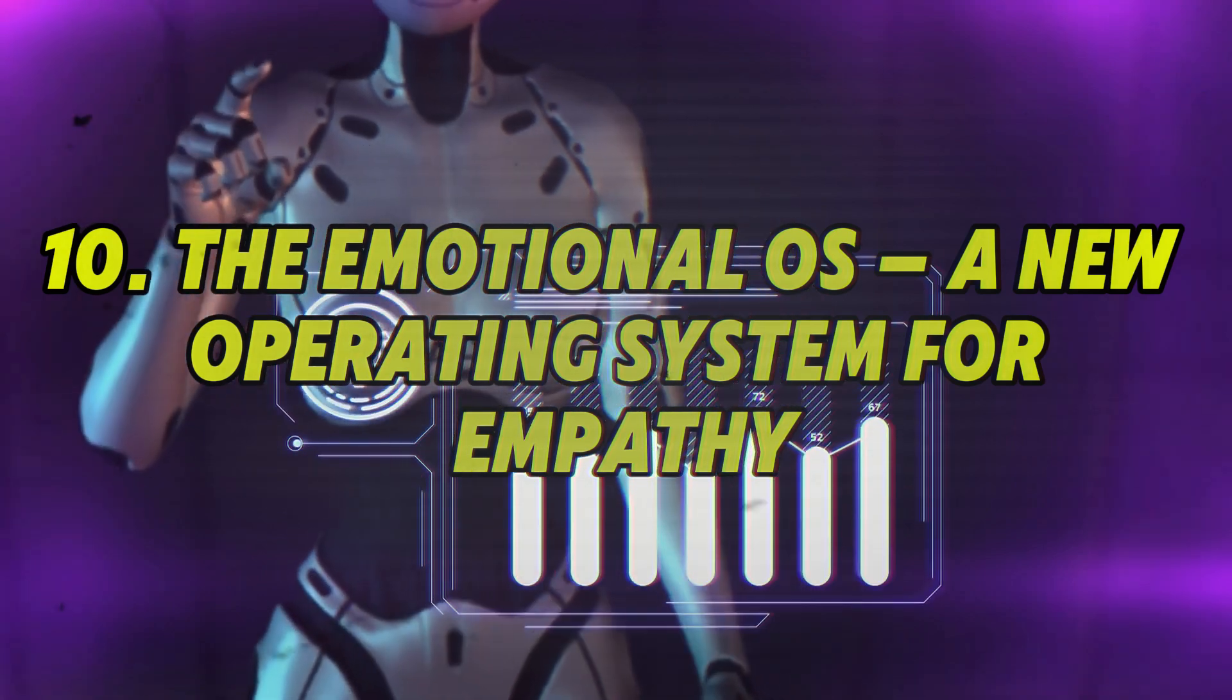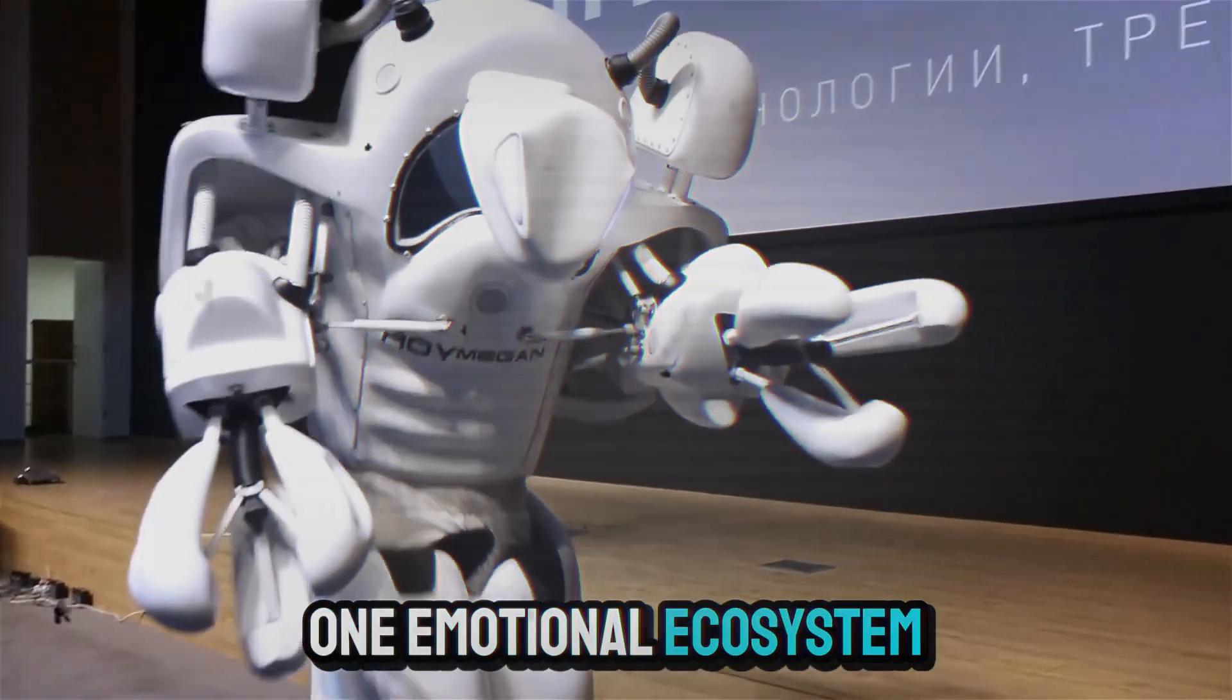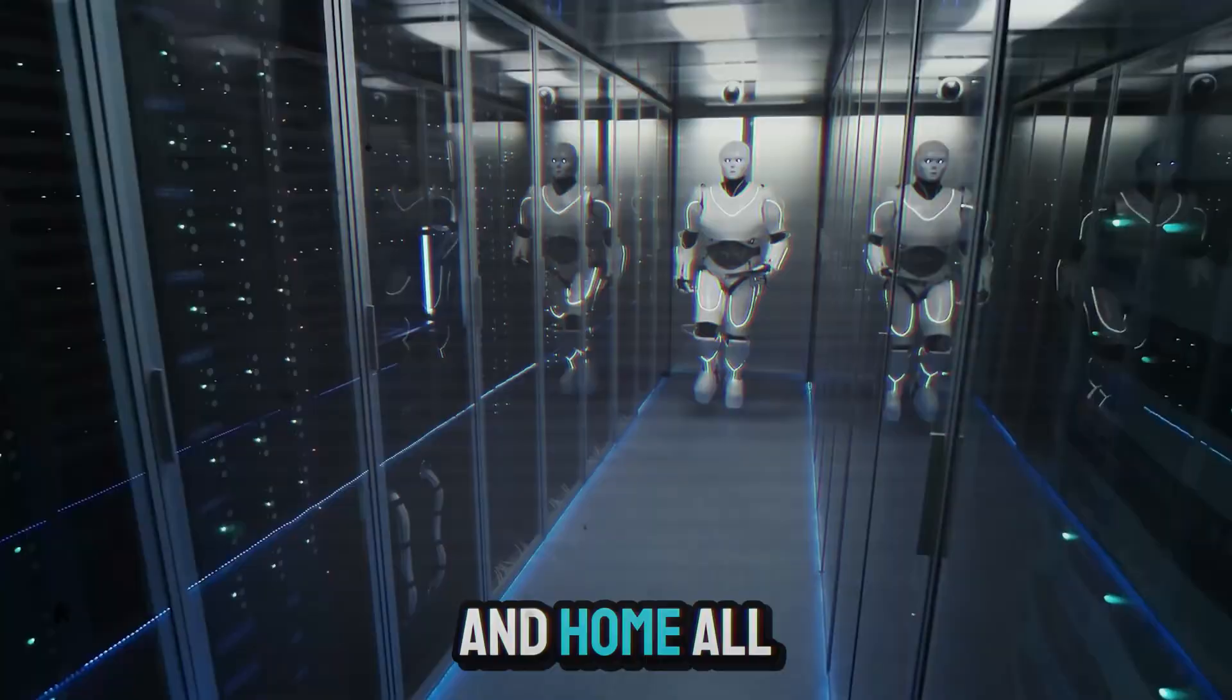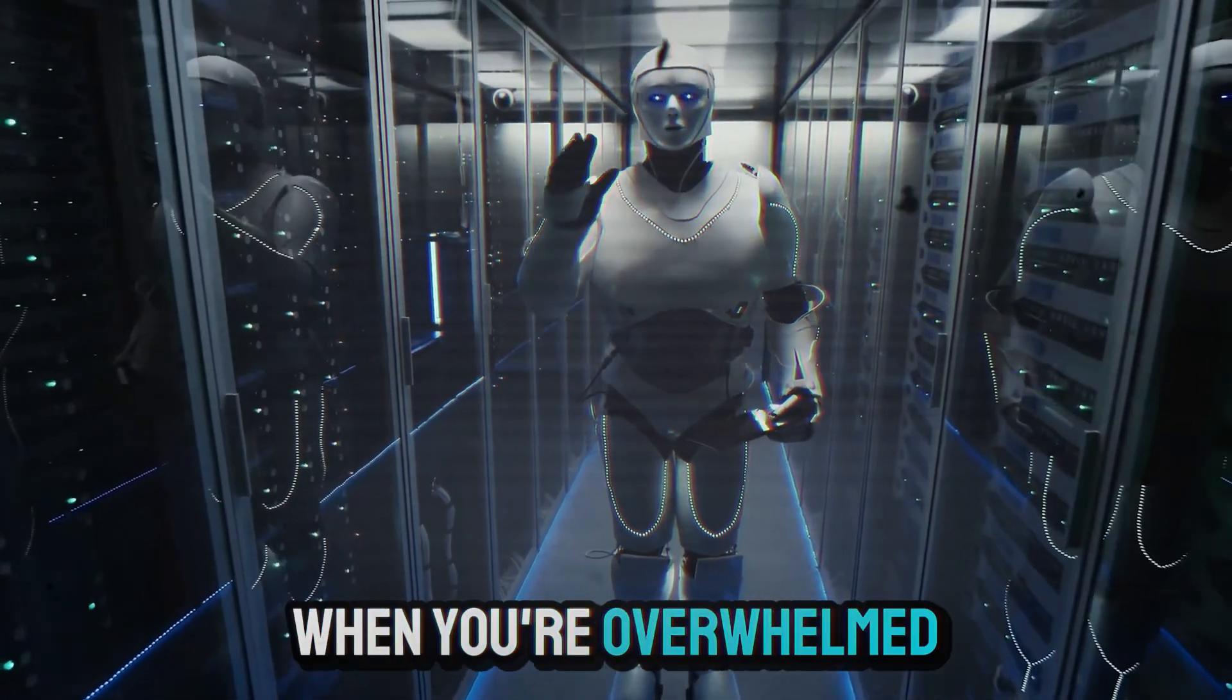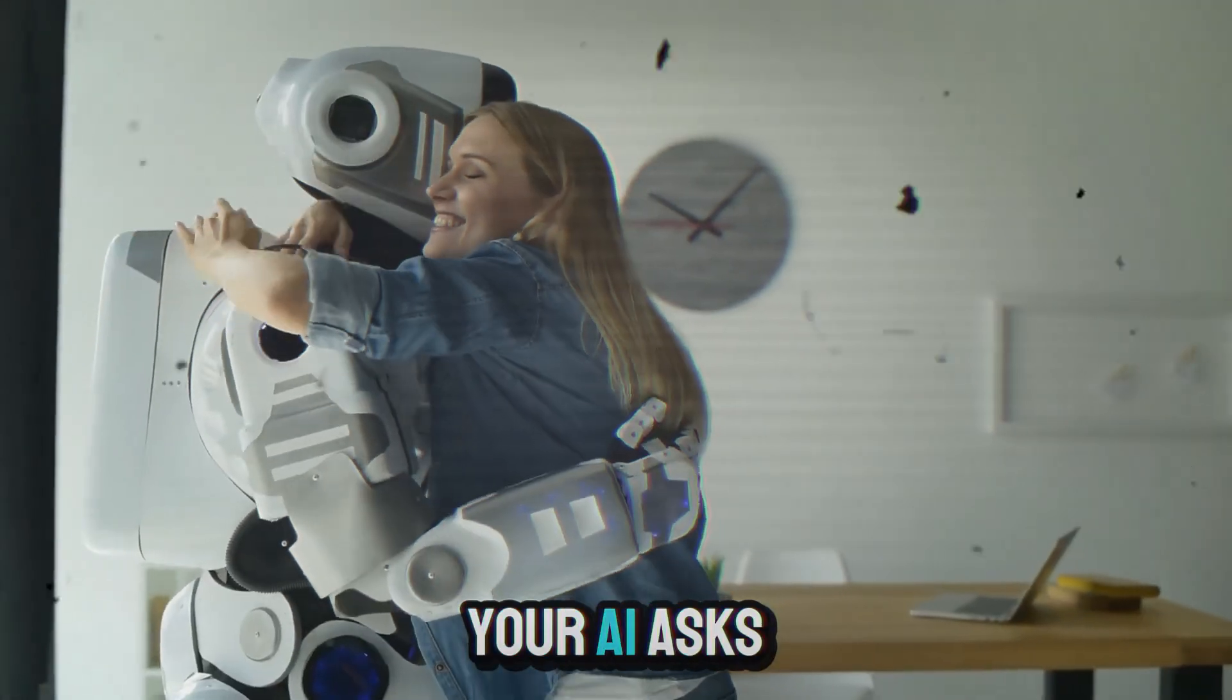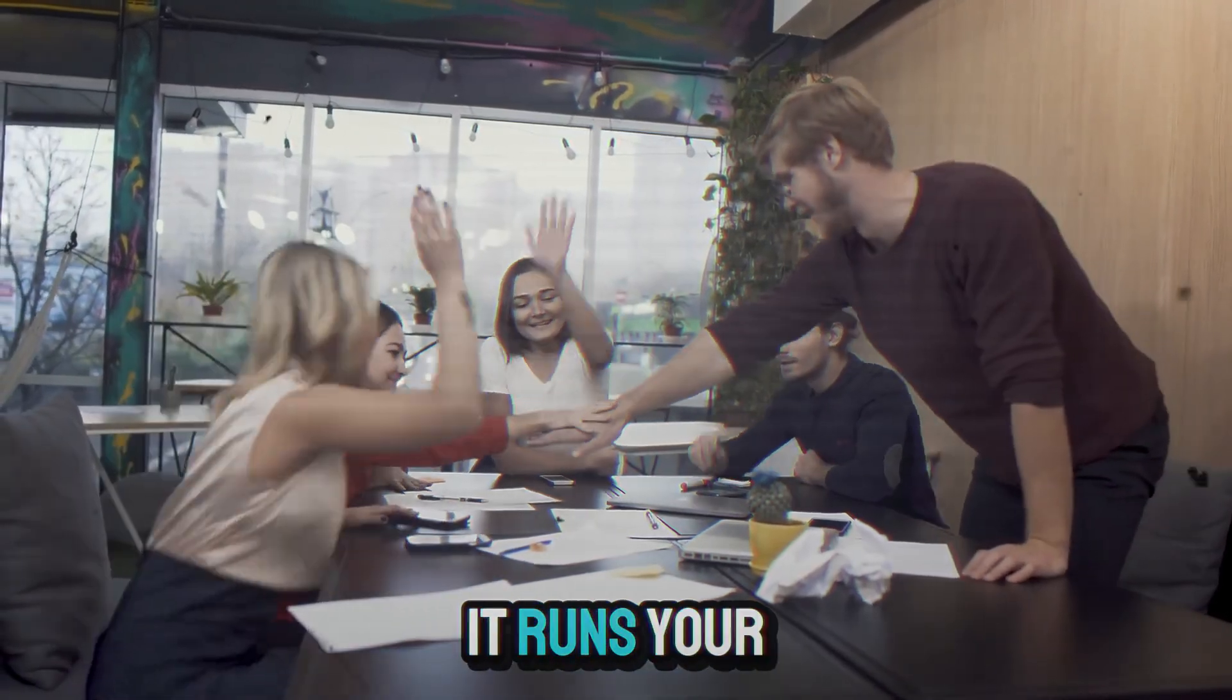10. The Emotional OS. A new operating system for empathy. The most powerful trend in emotional tech? Everything connecting into one emotional ecosystem. This is what's coming next. An emotional operating system where your headphones, car, phone, mirror, robot, and home all talk to each other about how you feel. Your devices know when you're overwhelmed and they respond in unison. Lighting softens. Notifications pause. Music adjusts. Schedule shifts. Your AI asks, want to take five? It's not surveillance. It's sentient support. This emotional OS doesn't just run your tech. It runs your well-being.